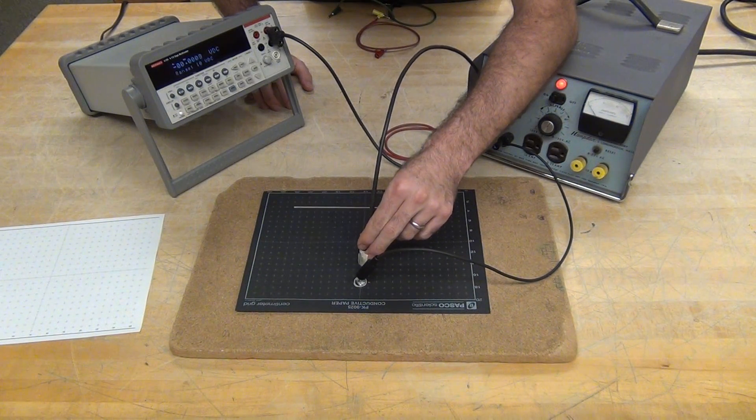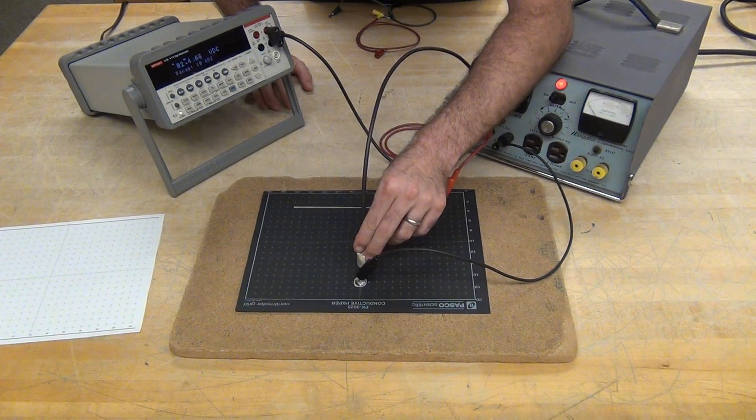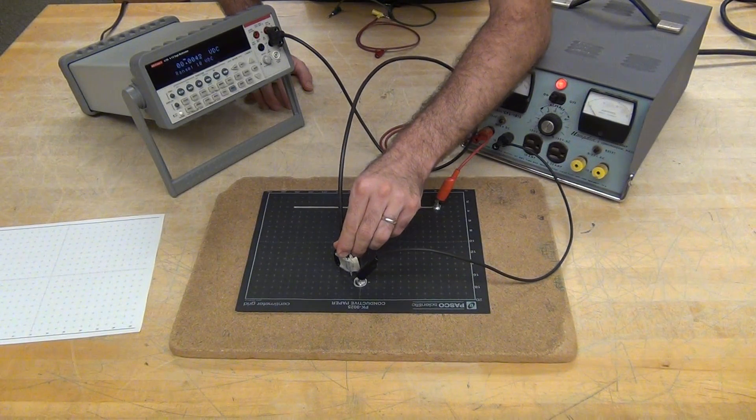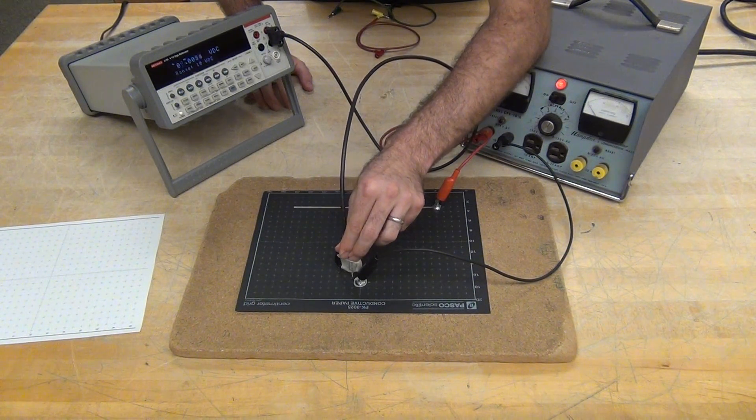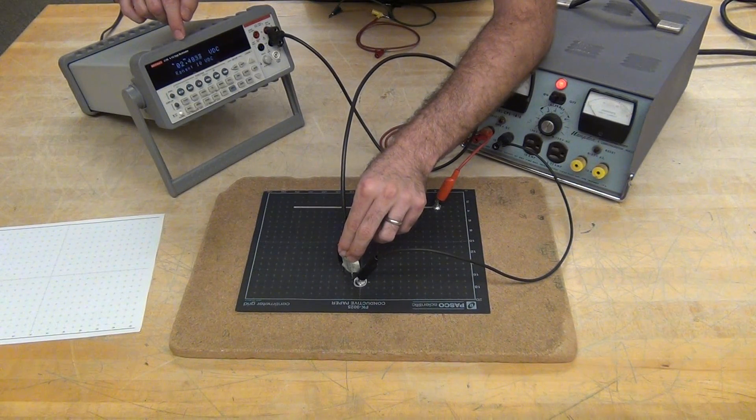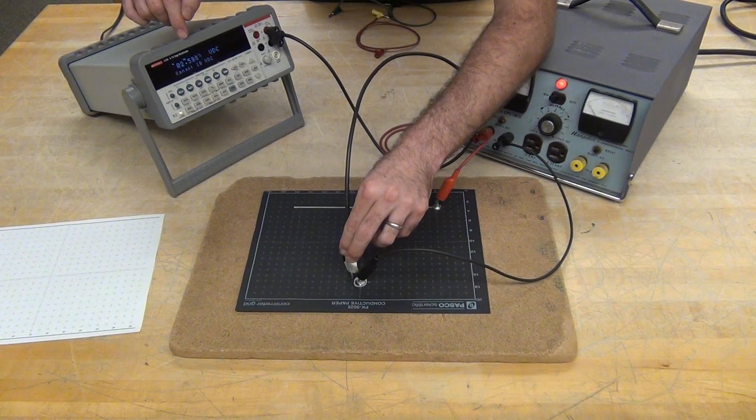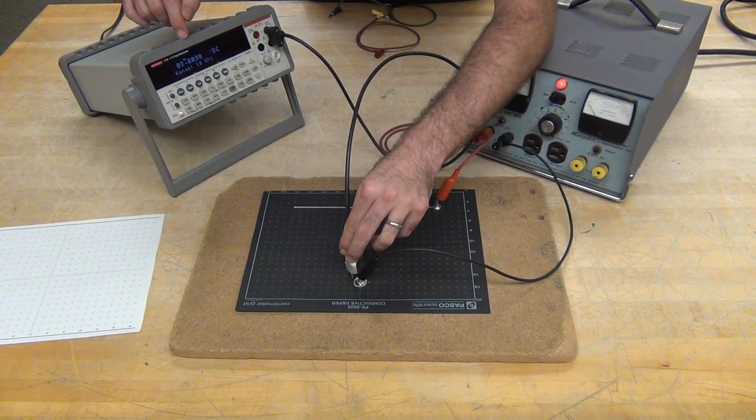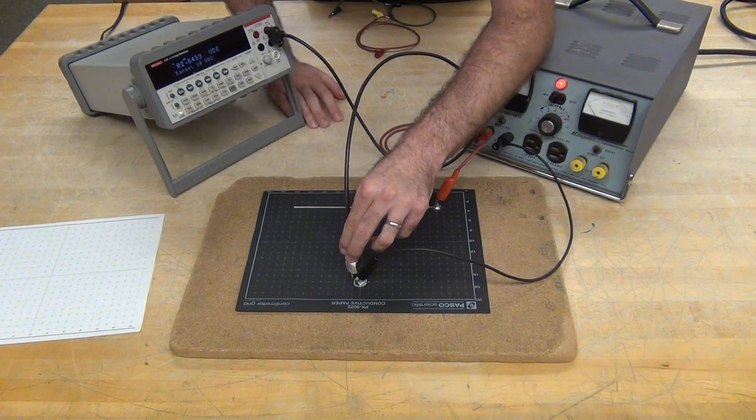So I'll start near one of my electrodes and I'll move, keep that point fixed, move the other end around until I find the largest change in electrical potential for that set distance between those two points. So that looks like about there.